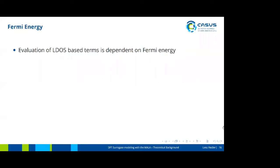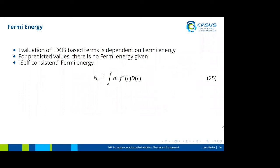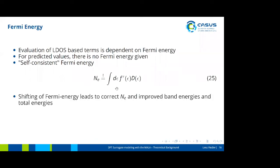One thing I haven't talked about yet is the Fermi energy. The evaluation of the LDOS is based on the Fermi-Dirac distribution at multiple steps of the calculation, and this is dependent on the Fermi energy. For predicted values during actual machine learning inference, there's no Fermi energy given. What we do is calculate a self-consistent Fermi energy — one that is constrained to reproduce the exact number of electrons when evaluating the integral over the DOS times the Fermi-Dirac distribution. We then shift the Fermi energy, which leads to the correct number of electrons and also improves band energies and total energies.